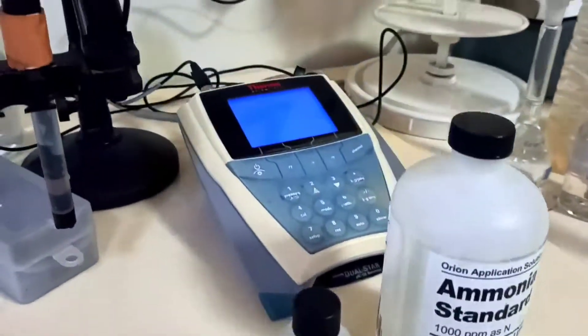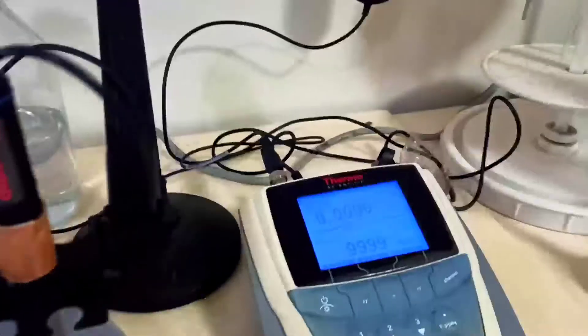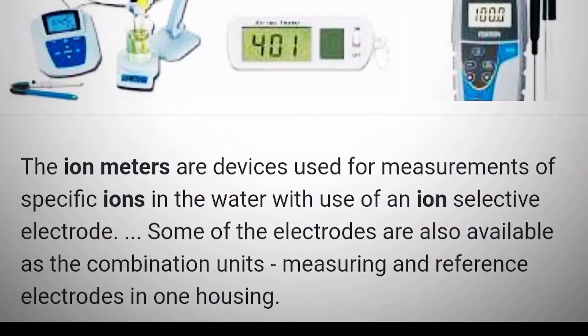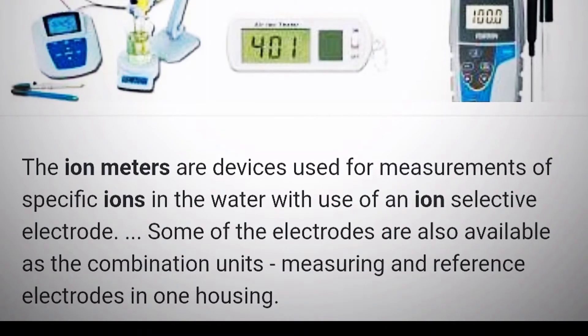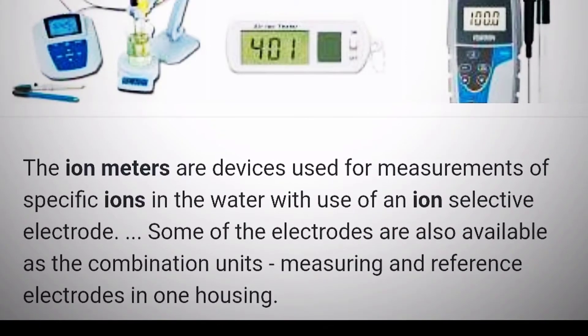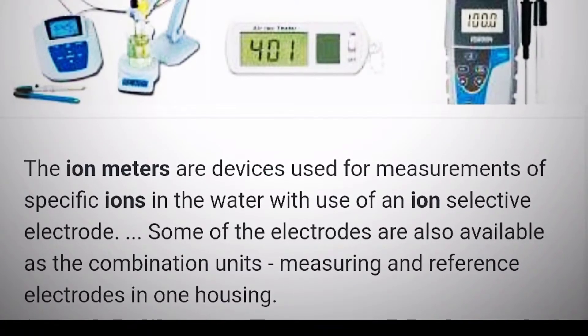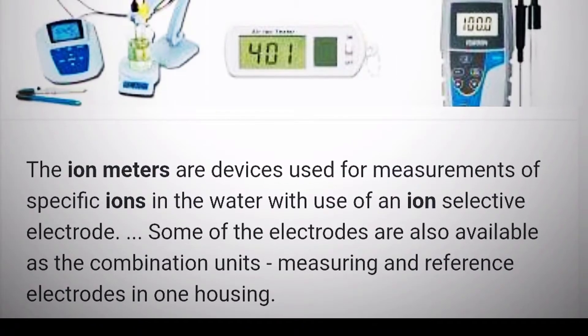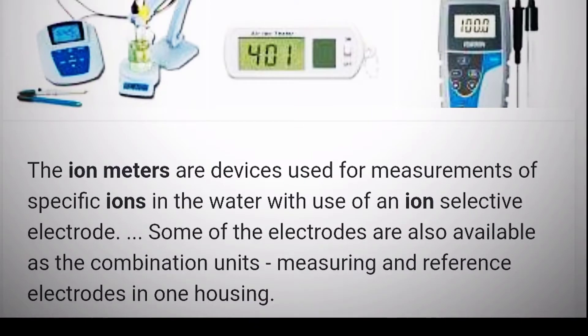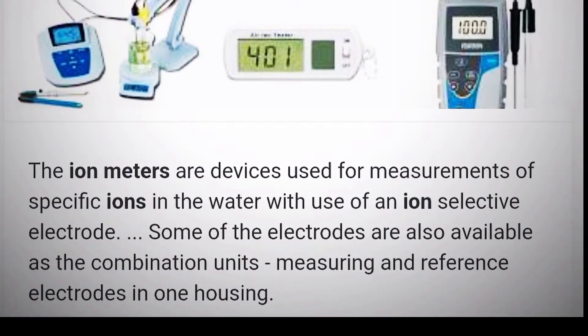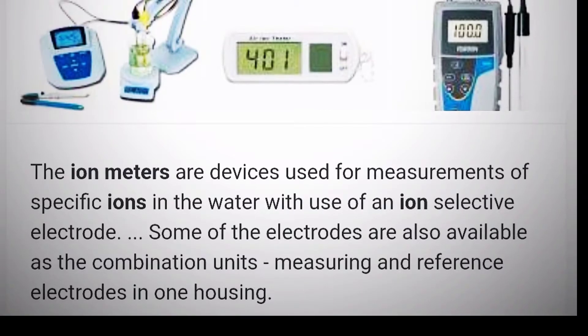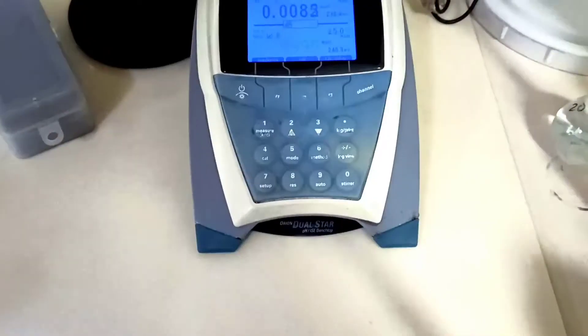This is the whole setup of an ion meter. Ion meters are devices used for measurement of specific ions in water with the use of ion selective electrodes. Today our ion selective electrode is ammonia. Some electrodes are also available in combination units, measuring and reference electrodes in one housing, similar to a pH meter. You can see the pH electrode, the reference electrode, and measuring electrode.